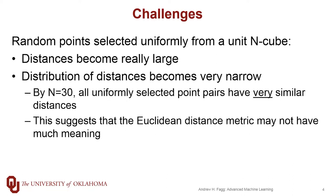Let's look at a very simple example. Imagine that our feature space fits within what they call a unit n-cube, meaning that we have n different dimensions and along each of those dimensions, each feature's values can be somewhere between zero and one. Let's imagine that our features fall uniformly within this n-cube. If we pick two points uniformly within the n-cube, the Euclidean distance between the two can become quite large, and in particular, as n starts to increase, this distance is going to also increase.